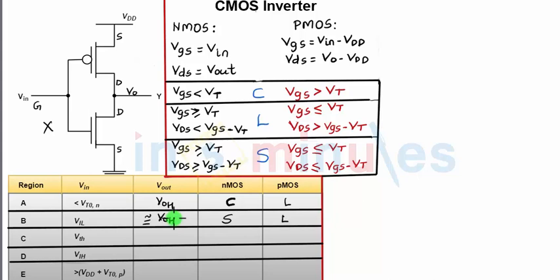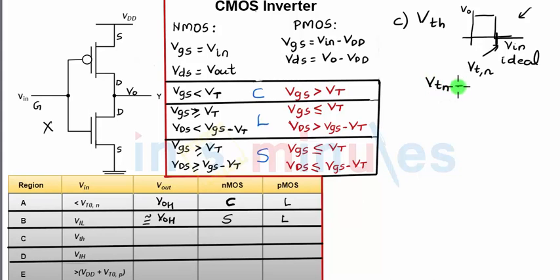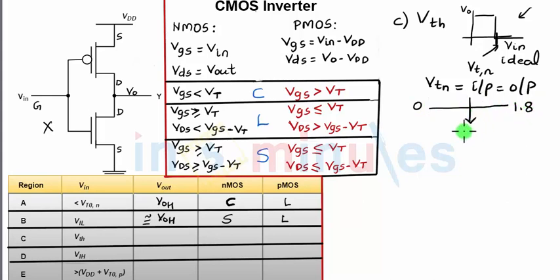Now we go to case 3: the switching threshold. The switching threshold is different from the threshold voltage. For a CMOS inverter, looking at the voltage transfer characteristics (Vout vs. Vin), the output remains high for a certain range and then goes low. The switching threshold is the point where the output switches — specifically where input equals output. For a supply range of 0 to 1.8V, the switching threshold should ideally be at the center, which is 0.9V.